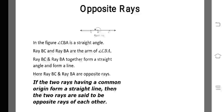Next topic: opposite rays. If two rays having a common origin form a straight line, then the two rays are said to be opposite rays of each other. From the figure, we can see that angle CBA is a straight line. Ray BC and Ray BA form a straight line. Therefore, Ray BC and Ray BA are opposite rays.